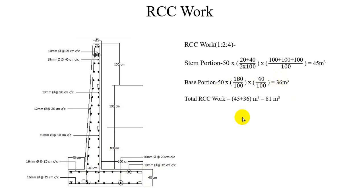The total RCC work is 81 cubic meters. This is the wet volume. Converting to dry volume by multiplying by 1.5 gives us 121.5 cubic meters.